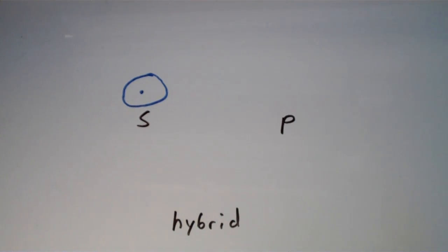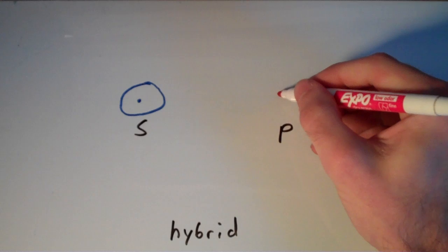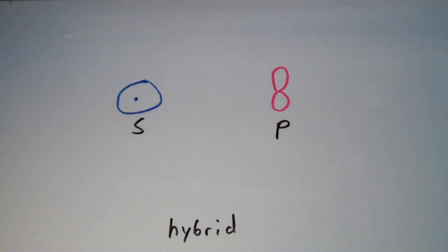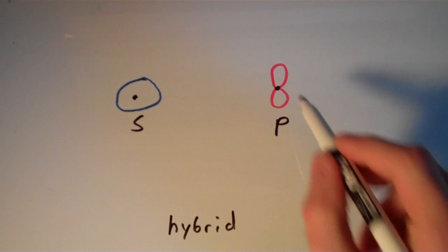So that's basically what the S orbitals look like. The P orbitals, those are dumbbell shaped. So I usually draw them like this. It doesn't quite look like a dumbbell shape, but it does emphasize the fact that there is a region of no electron density right there at the nucleus.